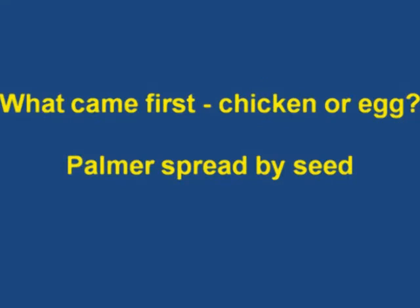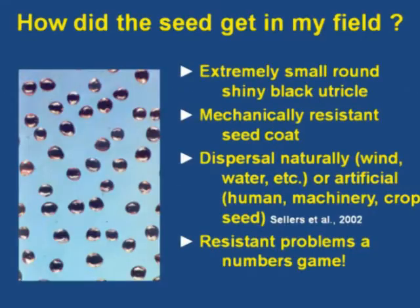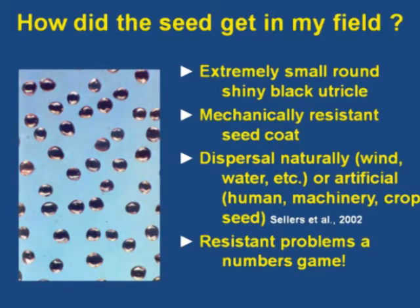What came first, the chicken or the egg? Well, there's no question here — the Palmer Amaranth seed is how you got the problem. It's an extremely small, round, black, shiny utricle fruit with a mechanically resistant seed coat. It spreads very easily, dispersed by natural and artificial means — wind and water are the two primary ones here in Arkansas, and also us humans with our equipment, combines, and crop seed. The resistance problem is just a numbers game: the more you've got, the more potential for resistance.